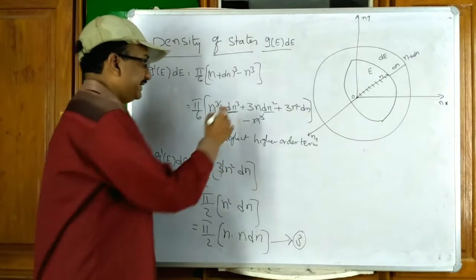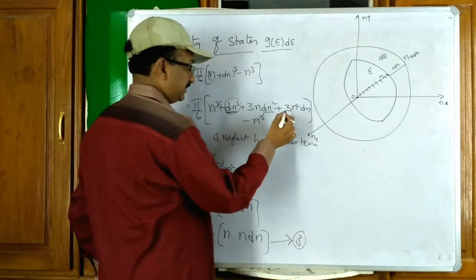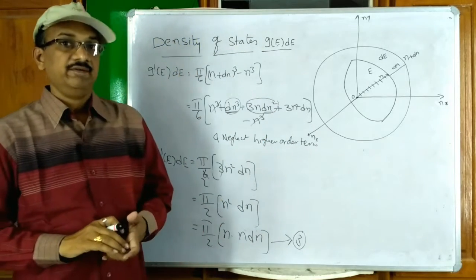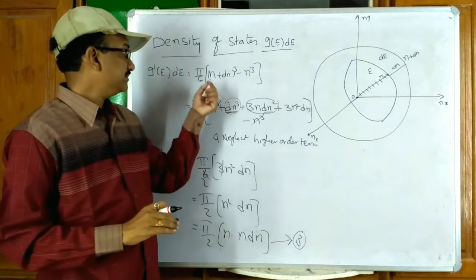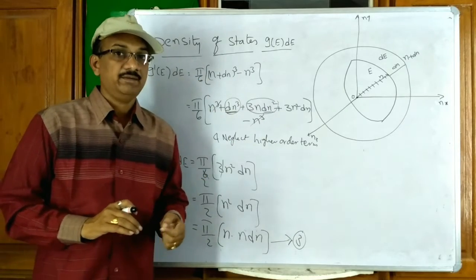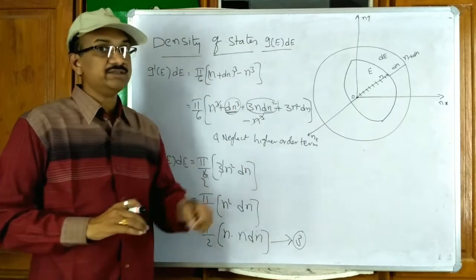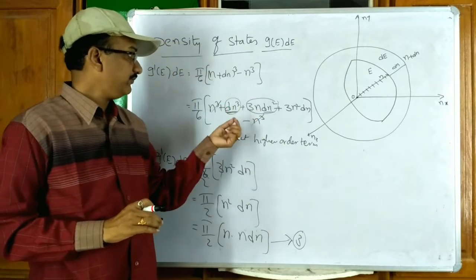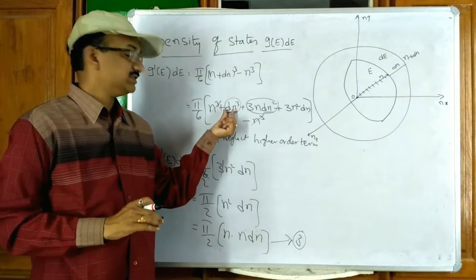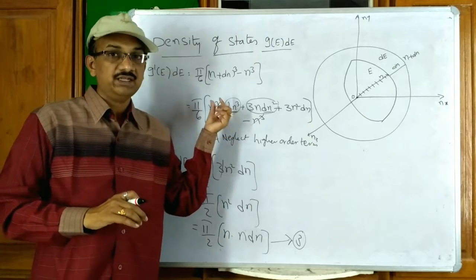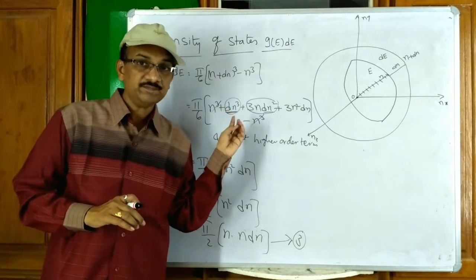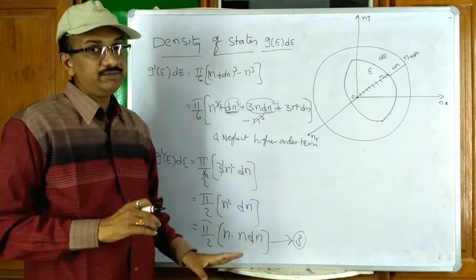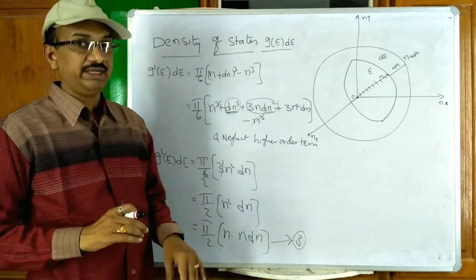We neglected the dN³ and 3N·dN² terms because N and dN are very small microscopic measurements. When you square a very small value, the result decreases further, giving a negligible higher-order term that we can ignore.